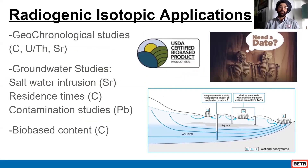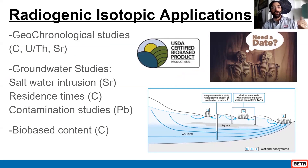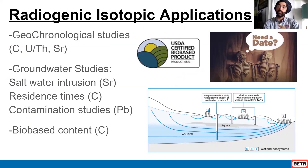Some radiogenic applications: geochronological studies using carbon, uranium-thorium, and strontium — these all help put things in their place and time. For groundwater studies, we can use the radiogenic isotopes of strontium, carbon, and lead to investigate plume extent, impact assessments, and bio-based content.